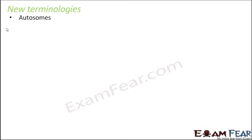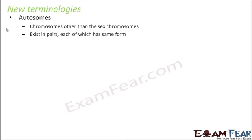Autosomes are the chromosomes other than the sex chromosomes. Humans have 44 autosomes in total. These chromosomes decide the characteristics of all body cells — for example, hair color, eye color, shape of the eye, shape of the mouth, and the shape of different organs. All the traits of the body are decided by genes present on the autosomes. They exist in pairs, and they control somatic traits such as eye color, eye shape, hair color, skin color, and ear shape.